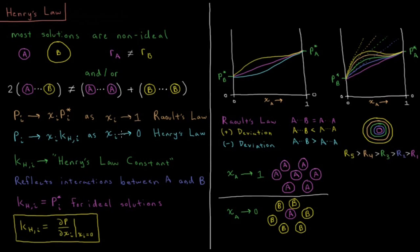Alternatively, as the mole fraction of that component goes to zero, the vapor pressure of component I approaches the mole fraction of that component times a constant, which we call the Henry's Law constant. As the mole fraction of component A approaches zero, A is now surrounded basically entirely by molecules of component B. So at low mole fractions, the vapor pressure of A isn't determined by its interactions with other A particles — it's determined by its interactions with other B particles. The Henry's Law constant reflects the interactions between A, which at low mole fraction you might call the solute, and B, which at high mole fraction you might call the solvent. So the Henry's Law constant really tells us how a solute interacts with a solvent.